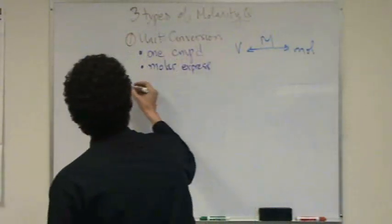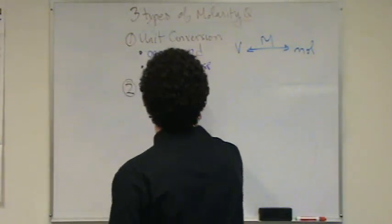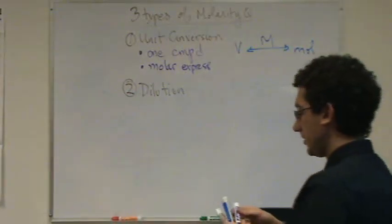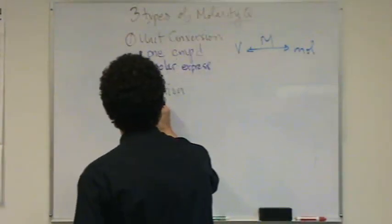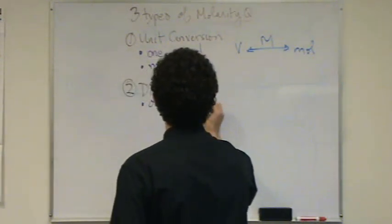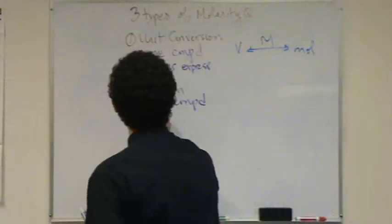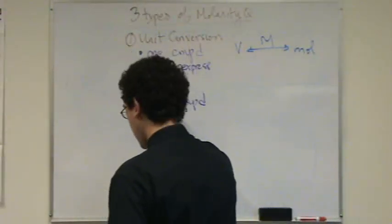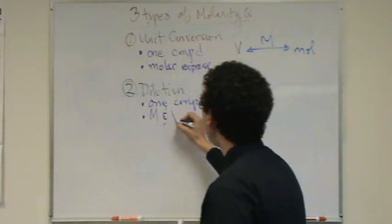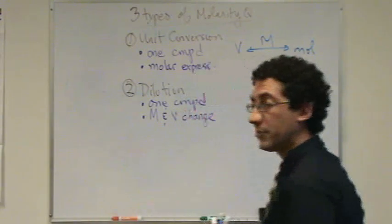The second type is called, also in your book, and I called it dilution. There's three little notes under this one. First of all, again, just like the top, it's one compound. So in that way, it's not too noticeable. It looks like the first one. Here's what really distinguishes it though. The molarity and, that's the and, volume will change. Both will definitely change.